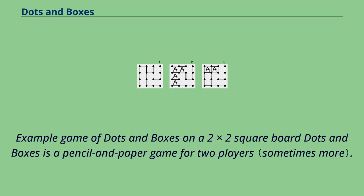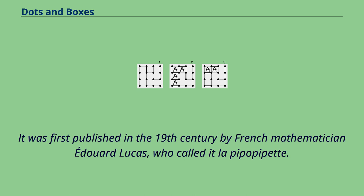Example Game of Dots and Boxes on a 2x2 square board. Dots and boxes is a pencil and paper game for two players. It was first published in the 19th century by French mathematician Edouard Lucas, who called it la pipopipette.